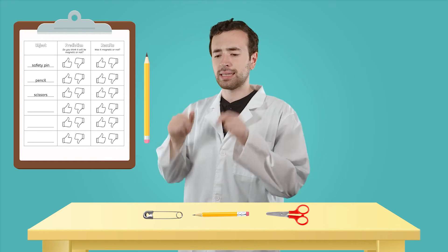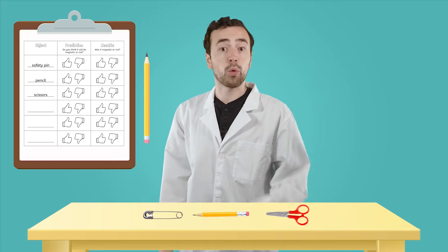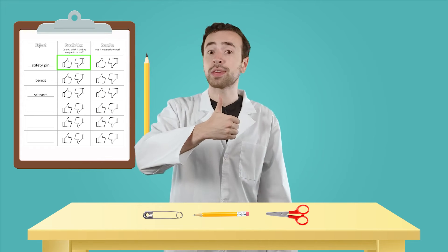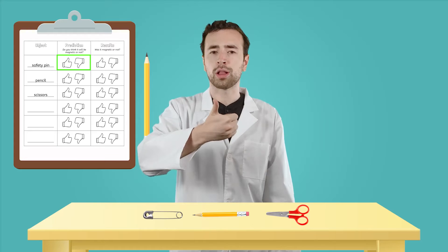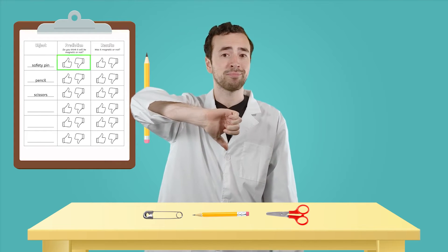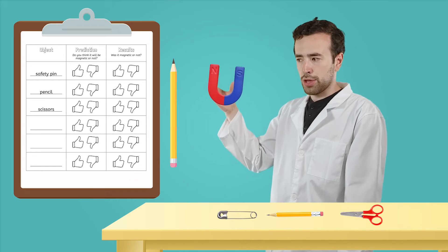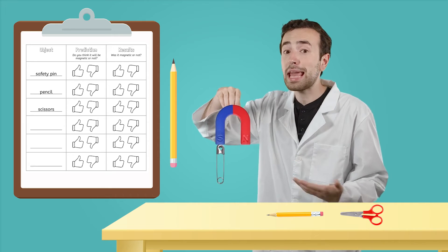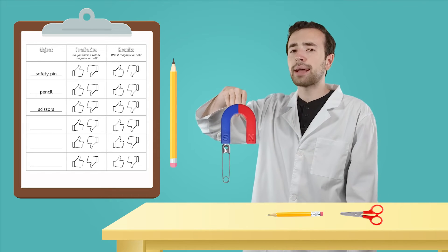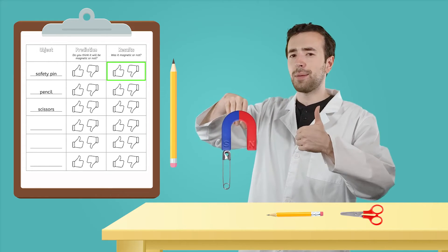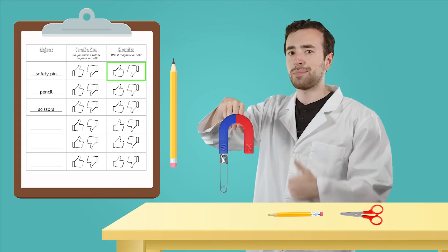The first object we're going to test is this safety pin. Before we test it, we need to make a prediction on our magnetism investigation sheet. Color in the thumbs up if you think it will be attracted to the magnet, or color in the thumbs down if you do not think it will be attracted to the magnet. All right, here we go. Look at that. The safety pin is magnetic. The magnet pulled it up using its force of magnetism. Color in the thumbs up in the next column to show that the safety pin was magnetic.